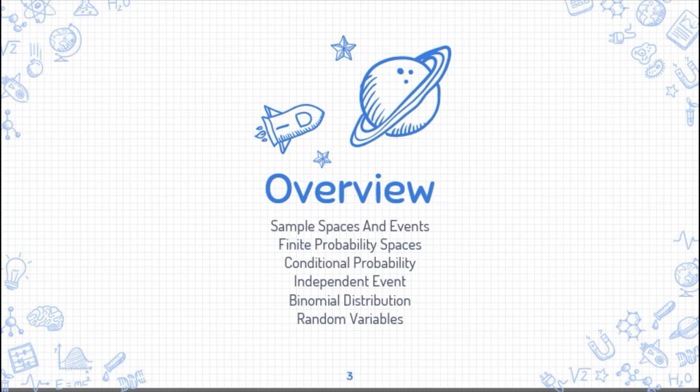We have finite probability spaces - there are also infinite probability spaces, but it is not in the scope of this subject because our subject is discrete, which means it has an ending. So the probability that we will be talking about here will be just finite. Then we have conditional probability wherein a certain event occurs depending on another event. And we have the independent event, which is the complete opposite of the conditional event.